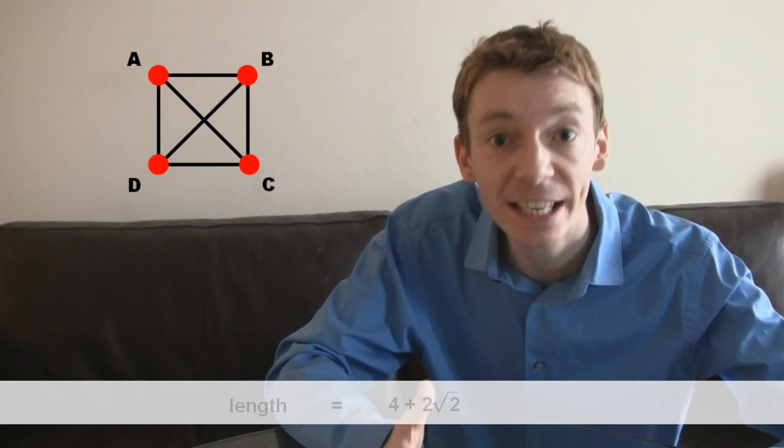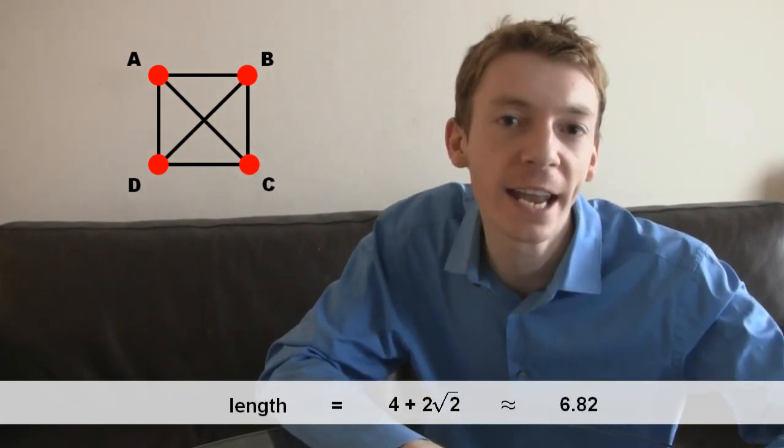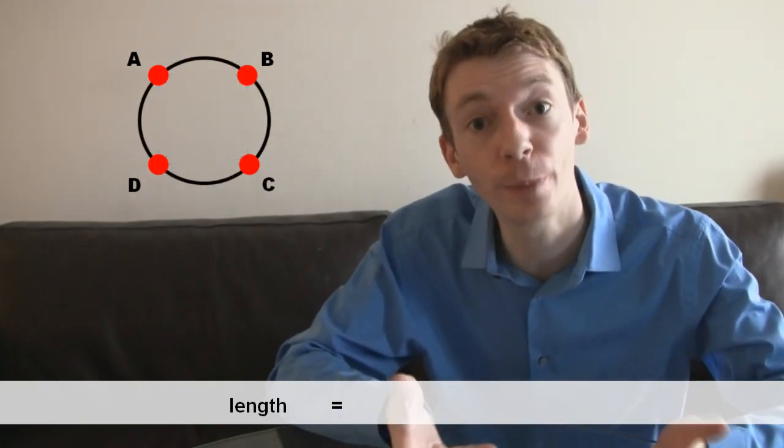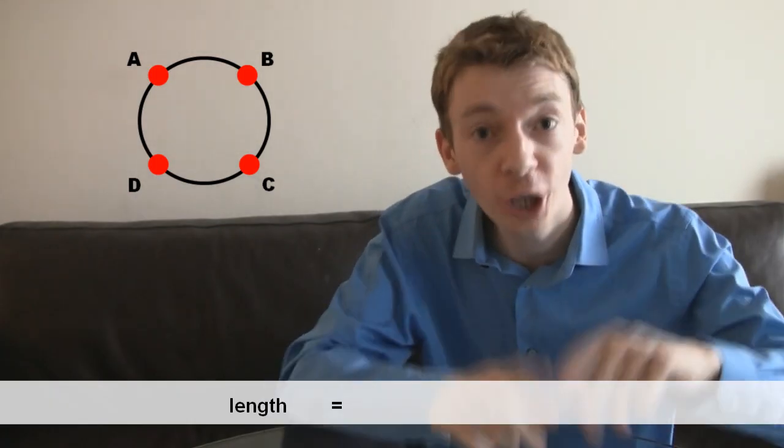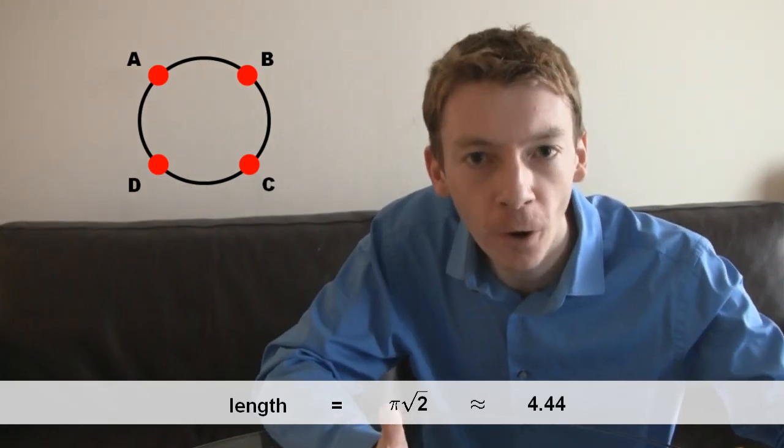So altogether, this has length 4 plus 2 root 2. That's about 6.82. We could connect the towns together in a big circle, perhaps. I've already told you the diagonal has a length of root 2, so the circle has a length of Pi root 2. That's about 4.44.